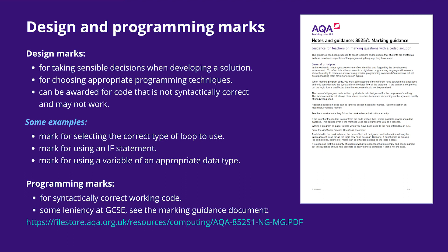For GCSE Paper 1 we've produced notes and guidance for teachers on marking programming questions, making explicit the approach that examiners will take when marking handwritten answers. These can be downloaded from our website using the link shown on screen. AS and A-level Computer Science Paper 1 students answer questions using a computer and an IDE to write their code. After developing their code, students copy and paste it into an electronic answer document. Sometimes students use screenshots but copy and pasting works much better as the text is usually bigger and clearer for an examiner to read.